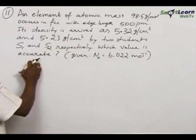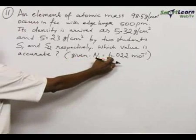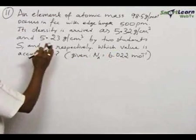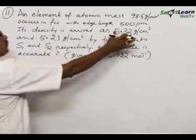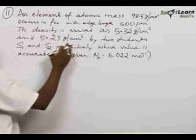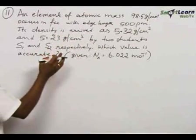Which value is accurate? Avogadro constant is 6.022 × 10²³ per mole. How to solve this problem? Here the density is given, FCC type unit cell is mentioned, atomic mass is given, but two students have calculated the value.